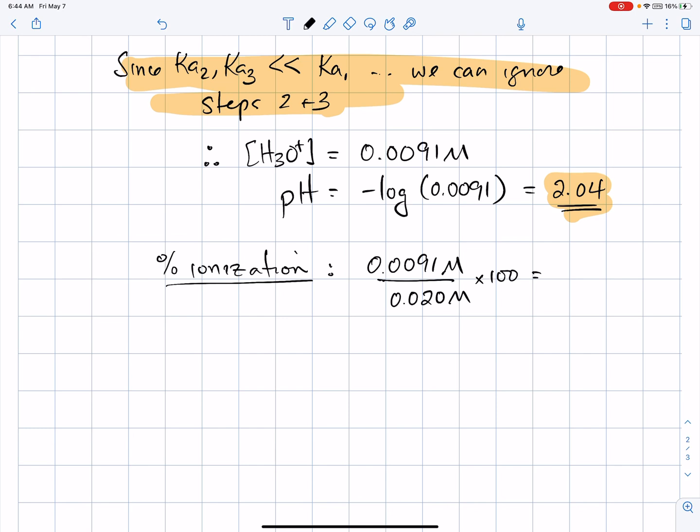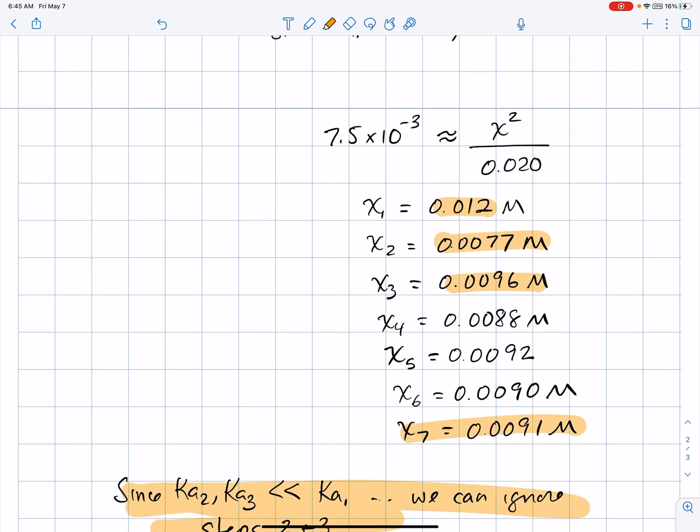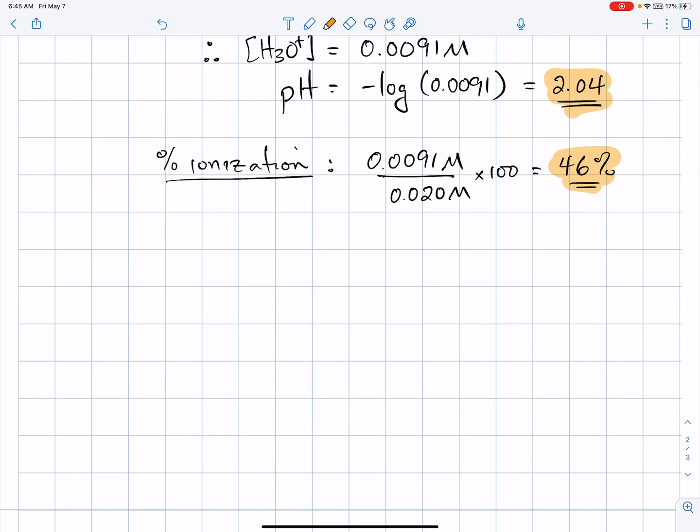So 0.0091 over 0.02 times 100. So this was actually 45.5, or I guess 46, if we put significant digits there, 46% ionized. If you've done other weak acid problems, that's a pretty high percent ionization. They're usually less than 10% ionized. Phosphoric acid had a pretty big Ka1. It was 10 to the minus 3. It was also reasonably dilute, 0.02 molar. Those two things combined meant that this was going to ionize to a large degree, larger than usual. That's why we ended up having to go through seven approximations. So 46%, almost half of it, ionized.